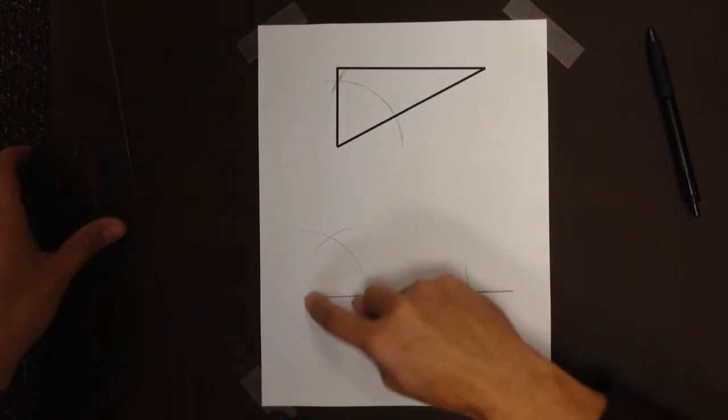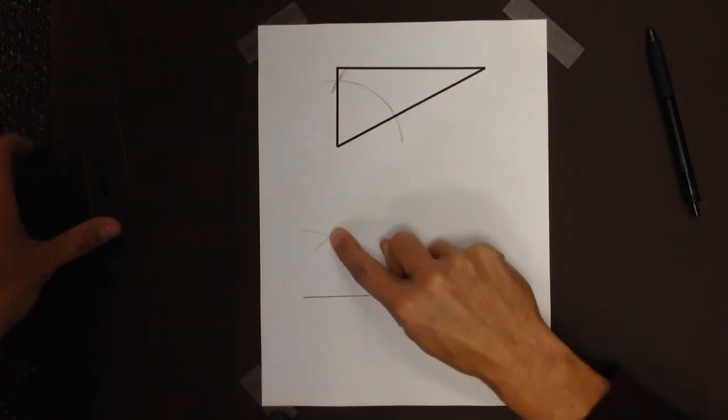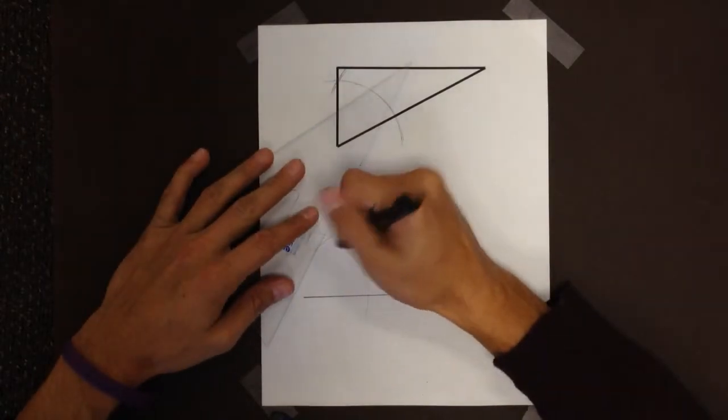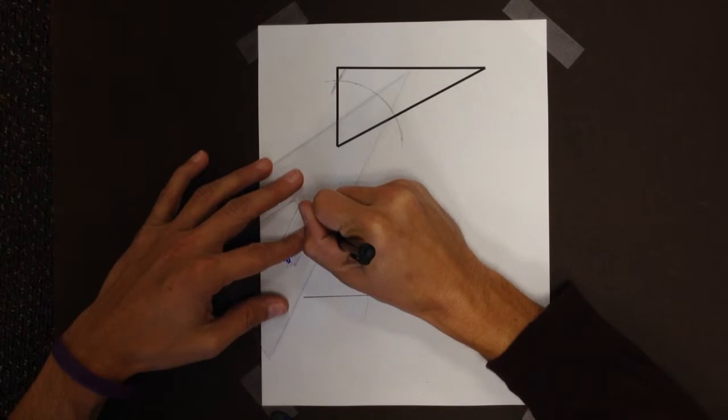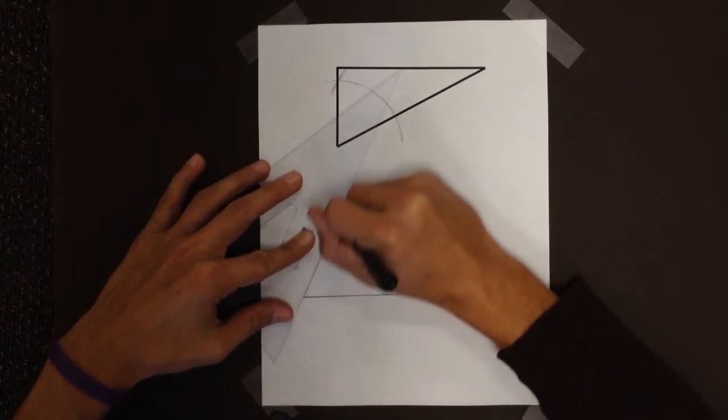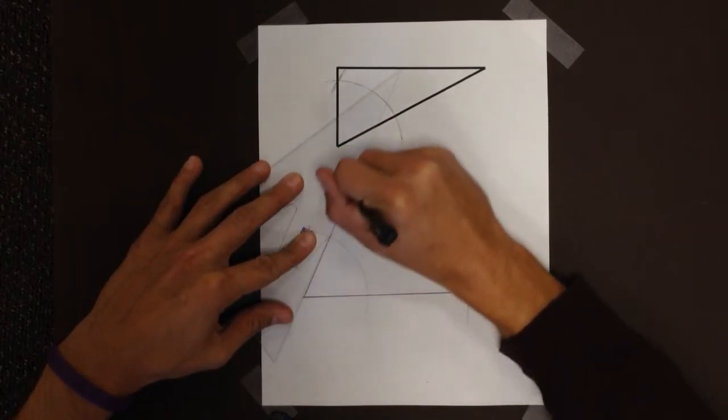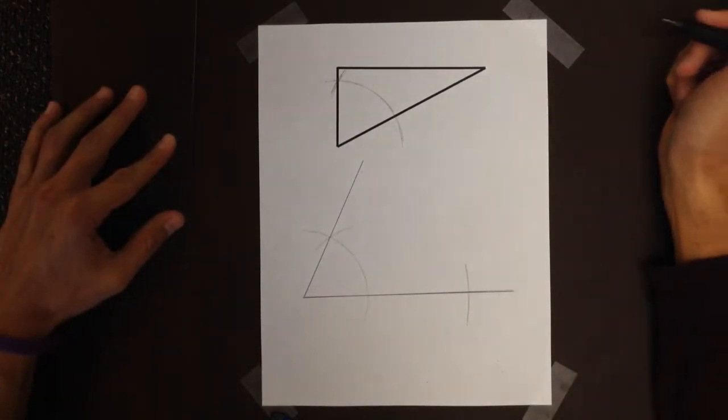And I can draw a line that goes from the end of my line through those crisscrossing arcs. I'm going to go far, because I don't know where it's going to meet.